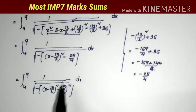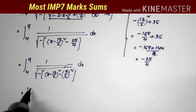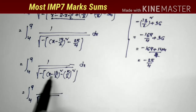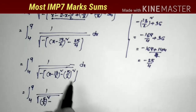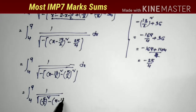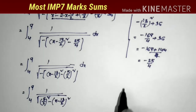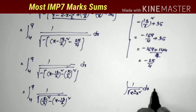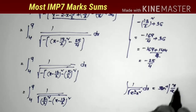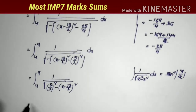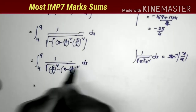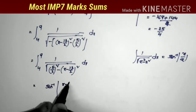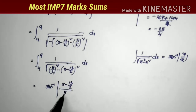Applying the minus sign to both terms rearranges this to 1 by square root of [(5/2) squared minus (x minus 13/2) squared]. This is clearly in the form of 1 by square root of (a squared minus x squared), whose integral formula is sin inverse of (x/a). So the formula gives sin inverse of (x minus 13/2) divided by (5/2).